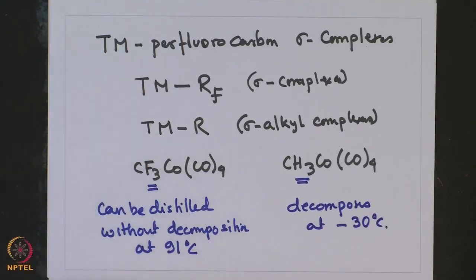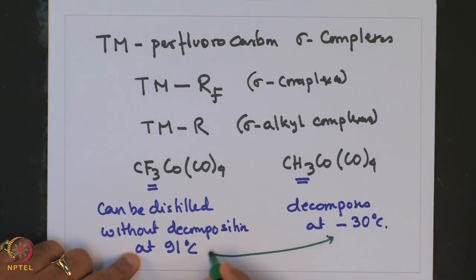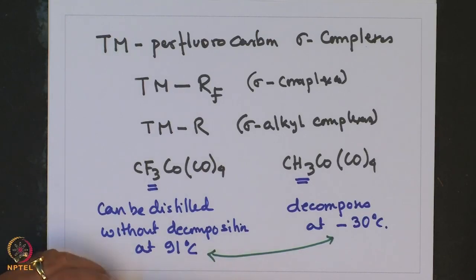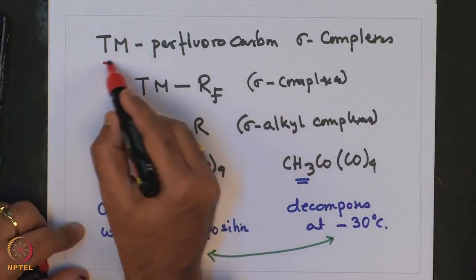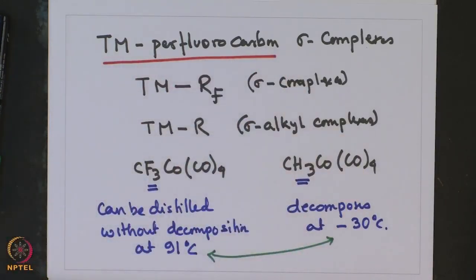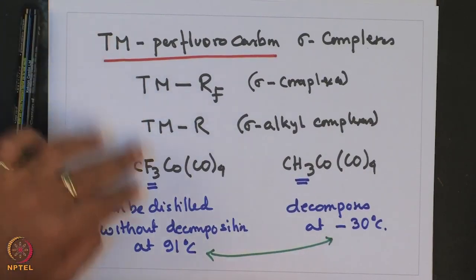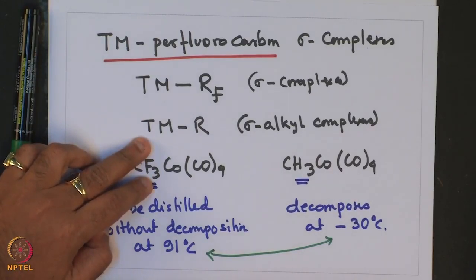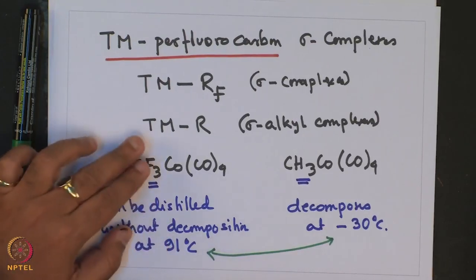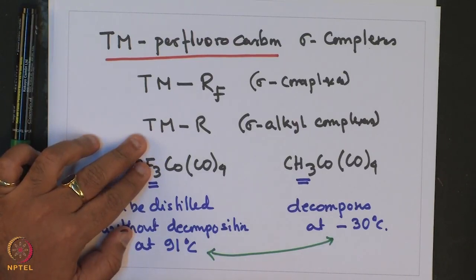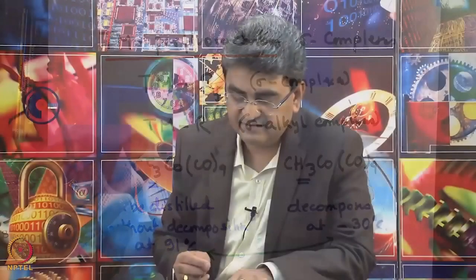One can see that there is a huge difference in stability when hydrogen is replaced by fluorine, and that is where the interest in perfluoro transition metal alkyl complexes arises from. Even though these complexes are structurally very similar to transition metal alkyl complexes, their properties are significantly different. This makes them interesting to study in comparison with transition metal alkyl complexes — to understand why and how they behave differently.